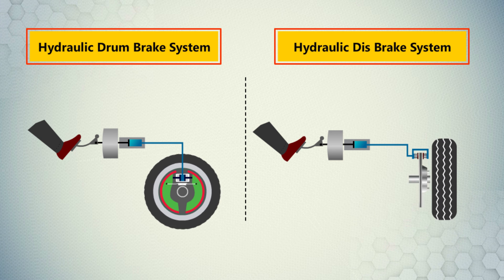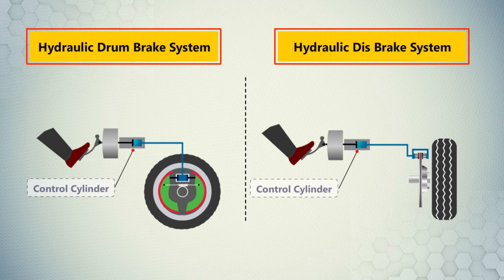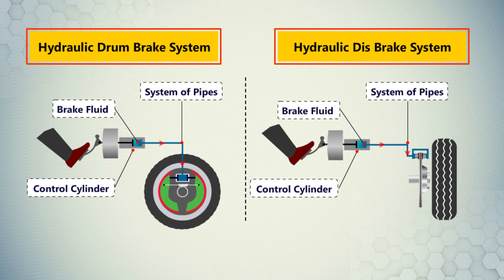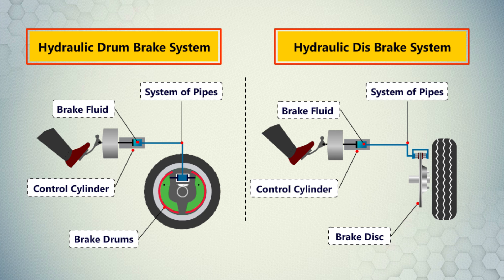When the brake pedal is pressed, the piston of the control cylinder applies pressure on the brake fluid. This pressure is transmitted via a system of pipes to cylinders at each wheel, causing a pair of pistons to push friction pads against the surface of the brake discs or brake drums. The frictional forces between these brake components cause the vehicle to slow down and stop.